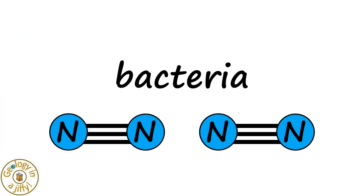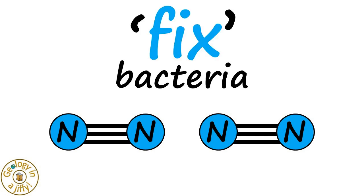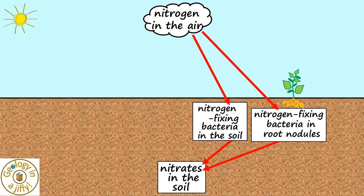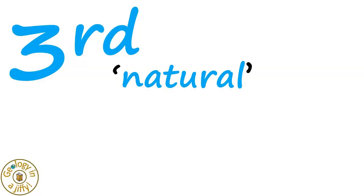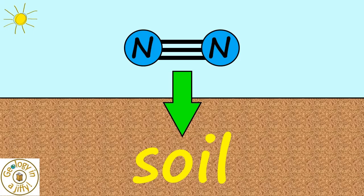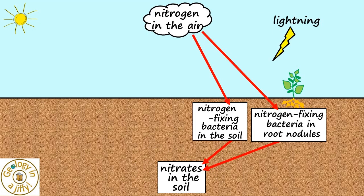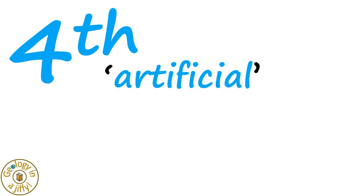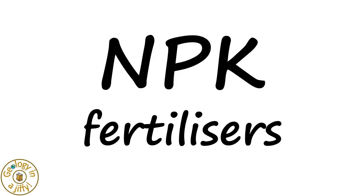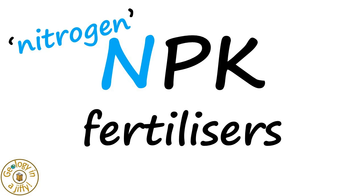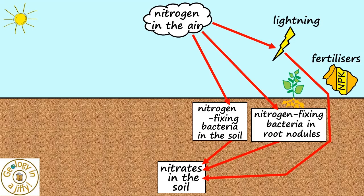The second way is also natural and helps put nitrogen into the soil by using the lightning from storms to help make nitrates in our soils. The fourth way is by artificial means, with humans using fertilizers such as an NPK fertilizer — the N standing for nitrogen — mixed with phosphorus and potassium, these dug directly into our soils adding nitrogen into the soil.